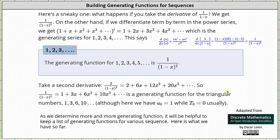Here's a sneaky one. What happens if we take the derivative of 1 divided by 1 minus x? We get 1 divided by the square of 1 minus x. To find the generating series, we take the derivative of 1 plus x plus x squared plus x cubed and so on. The derivative of 1 is 0; the derivative of x is 1; the derivative of x squared is 2x; the derivative of x cubed is 3x squared, etc. The generating series is 1 plus 2x plus 3x squared plus 4x cubed, generating the sequence 1, 2, 3, 4, 5, and so on. So the generating function for 1, 2, 3, 4, 5, and so on is 1 divided by the square of 1 minus x.